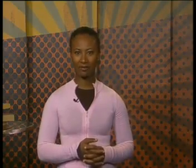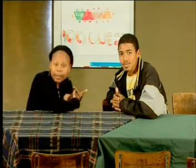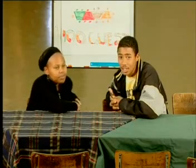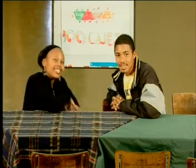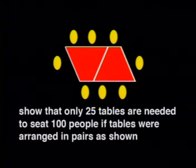Let's see how Sigra and Gerard are getting along. We figured out that we can use fewer tables if we put two together and seat eight people around them. That way we use our space better and we only need 25 tables. Well done, you two. Now it is your turn. Work out how to use 25 tables for 100 people. You could start by making diagrams or you could set up a table of values to find your answer. If you can fit eight people around two trapezoid-shaped tables, show that only 25 tables are needed to seat 100 people if tables are arranged in pairs.